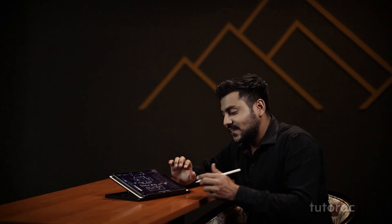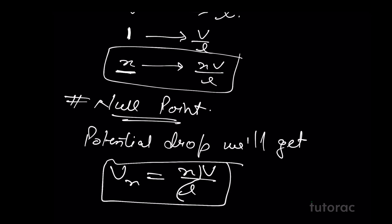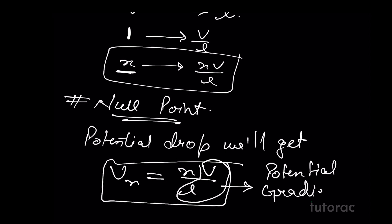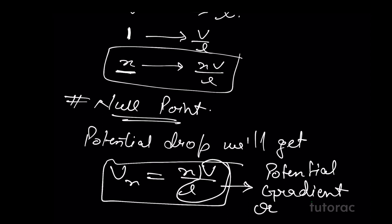Now, V/L is something we call the potential gradient, also written as k. There are many other applications of the potentiometer as well. That's all for this session. We will meet again with a new course and understand more concepts of physics. Till then, keep learning and keep exploring with TutorApp.